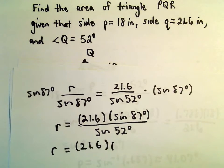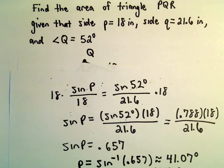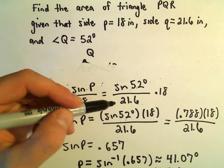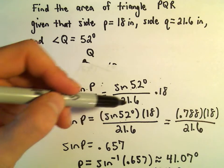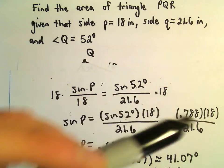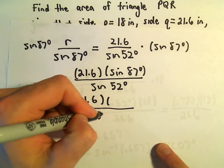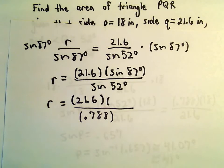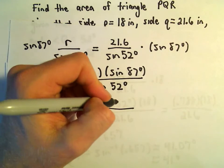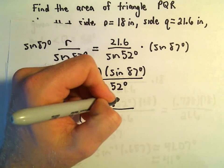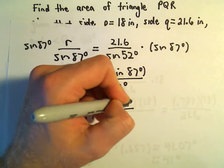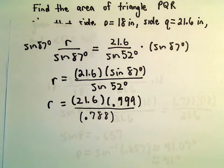So we'll get that r equals 21.6 times sine of 87 degrees over sine of 52 degrees. Let's see, I think we said somewhere sine of, did we calculate sine of 52 degrees? We did. We said sine of 52 degrees was 0.788. So that's what's going to go in the denominator, the 0.788. We've also got to calculate sine of 87 degrees. I don't think we did. Sine of 87 degrees, I'm getting 0.999 after rounding.